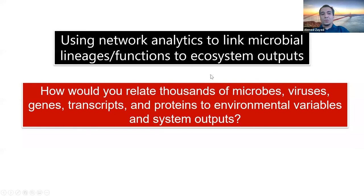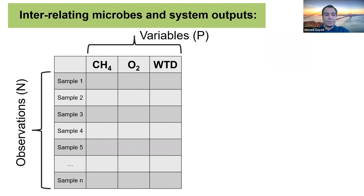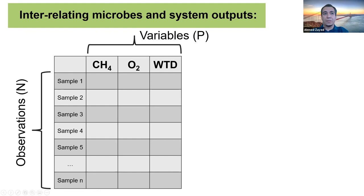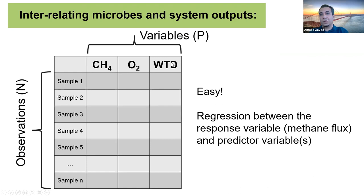The difficulty comes from the complexity of doing statistics on these data sets. Let me use three variables — environmental measurements: methane concentration or methane flux, oxygen concentration in pore water soil sample, and water table depth. You have collected multiple samples, so these are your observations. If you want to correlate a couple of these variables to each other, the entire process would be easy — just do Pearson correlation, Spearman correlation, or direct regression between the two variables you are interested in.